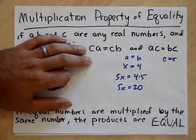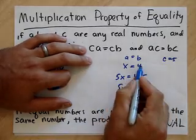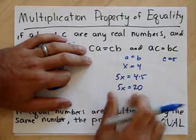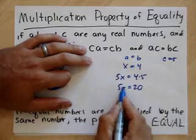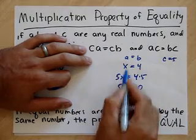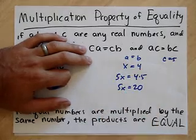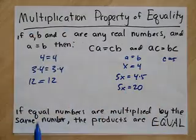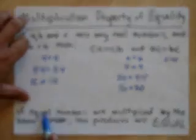Is X still 4? Is this still equal? We said X was 4 — yes, 5X still works. Basically, if equal numbers are multiplied by the same number, the products are equal.